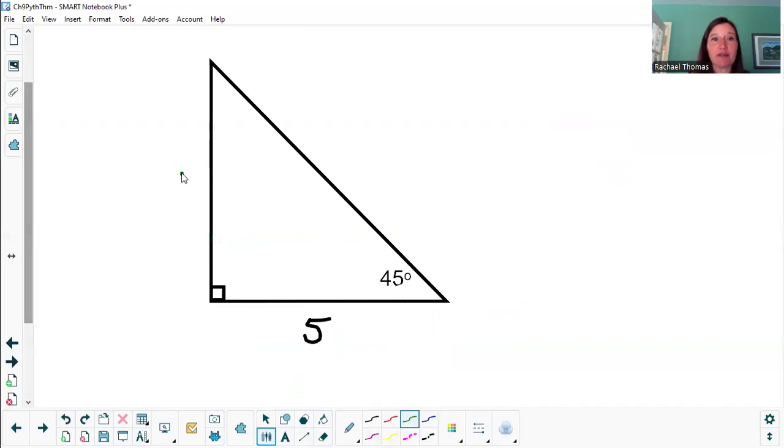On this one, I'm given 5, 5, 5 root 2. These sides are always equal. The hypotenuse is going to be greater.